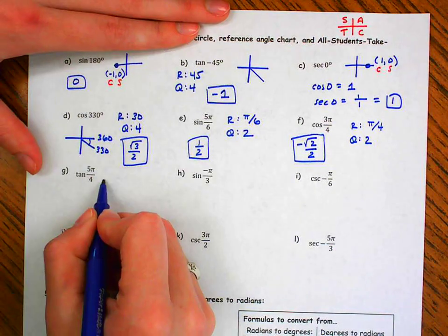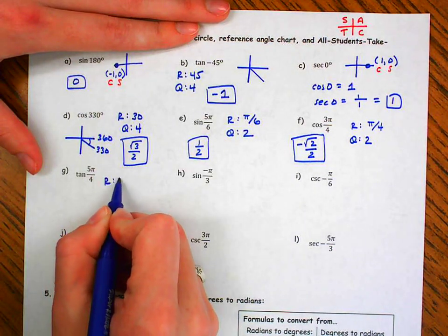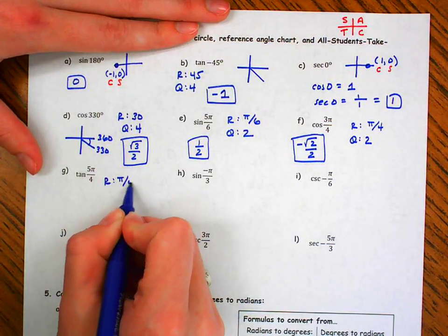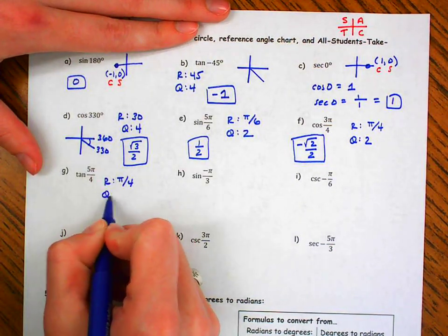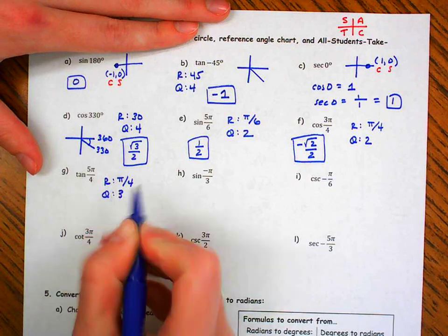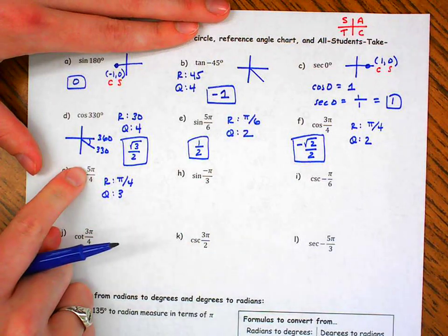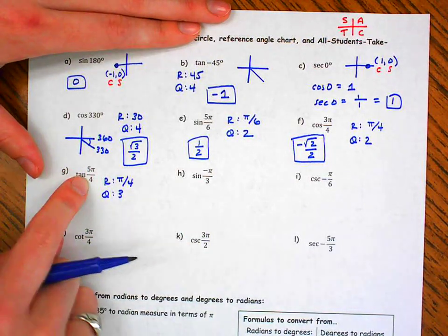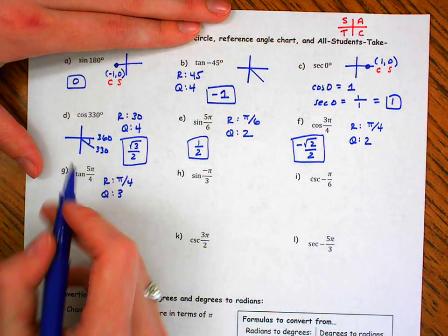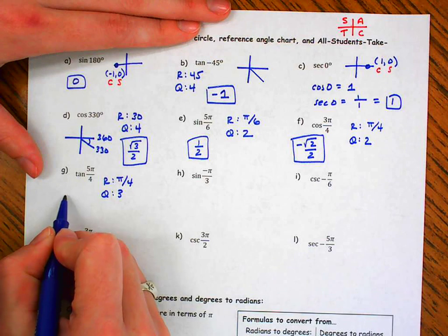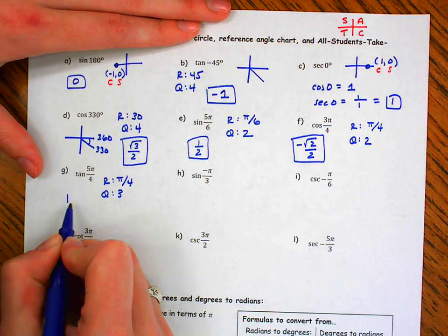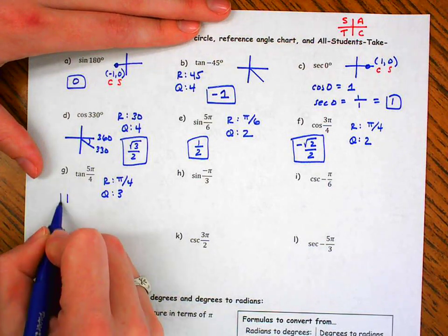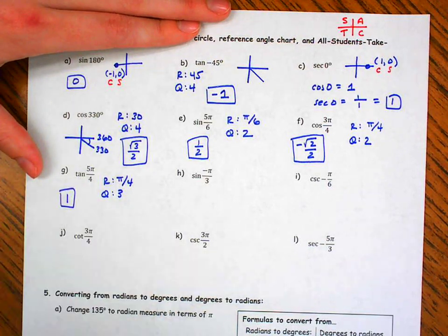Let's look at G. My reference angle is pi over 4. My quadrant is now quadrant 3, because my numerator is 1 more than my denominator. Tangent of pi over 4 is 1. Tangent in quadrant 3 is positive.